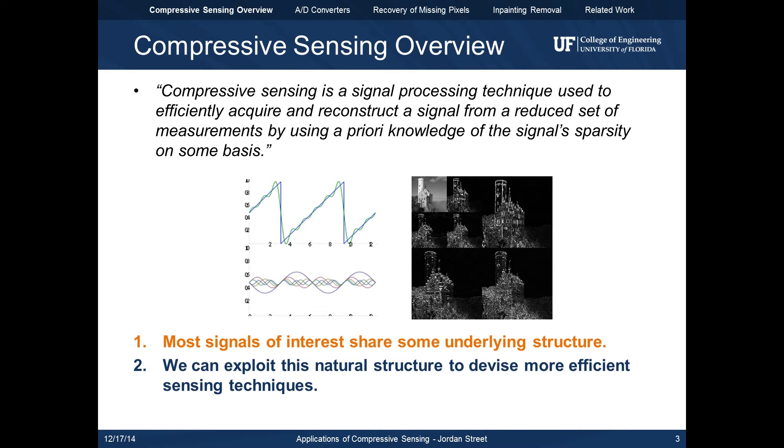Before we go into the mathematical details, we start with the observation that most signals share some underlying structure. The figure on the left shows how a triangle wave can be decomposed into distinct Fourier modes, and the figure on the right shows the wavelet decomposition of an image which is used in the JPEG 2000 compression standard.